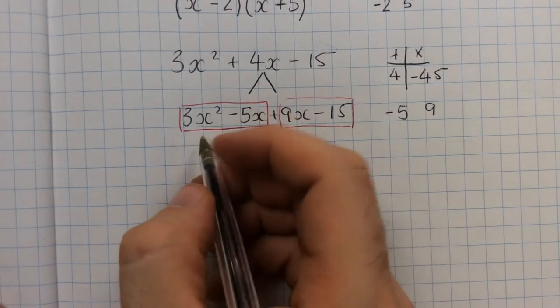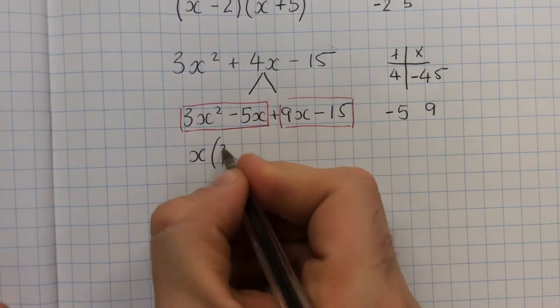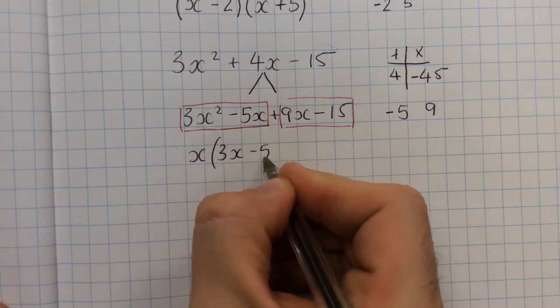What's common in here and here? The only thing common is an x. And in the bracket we're going to get 3x minus 5.